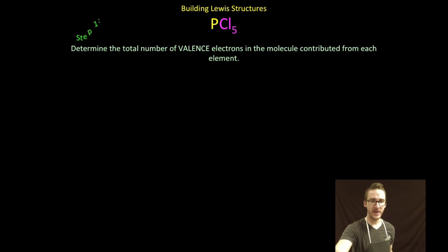Our first step, as always, determine the total number of valence electrons in the molecule contributed from each element. Phosphorus has got five valence electrons to start out. Chlorine has got a total of seven valence electrons to begin with. There's one atom of phosphorus in this molecule contributing a total of five valence electrons.